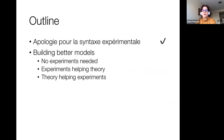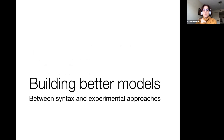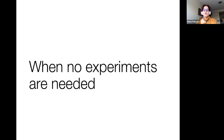Now that I've shown you why we need to talk about that, I want to look at three facets of how we could build better models. I'm going to start with an example where an experiment is totally not necessary — it would be a waste of time. Then we're going to look at one example where experiments can actually help theory, and then where theory can help experiments. So: one is no experiments needed, two is experiments helping theory, and three is theory helping experiments.